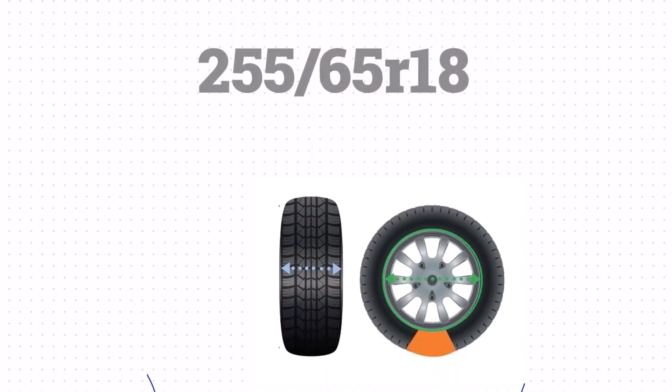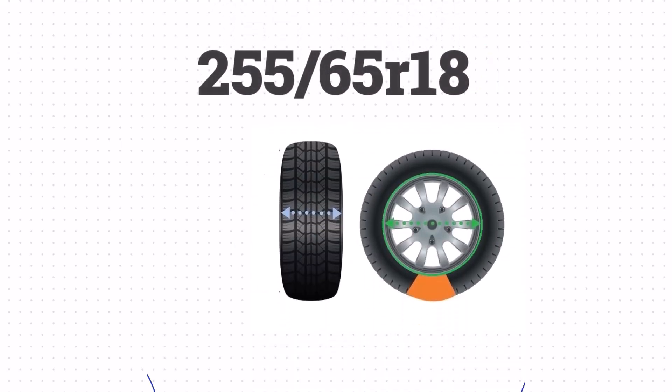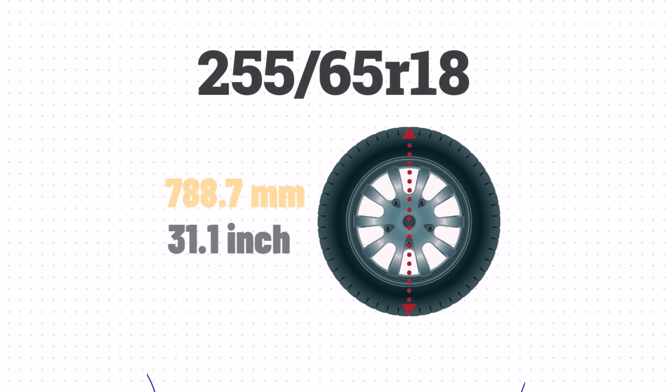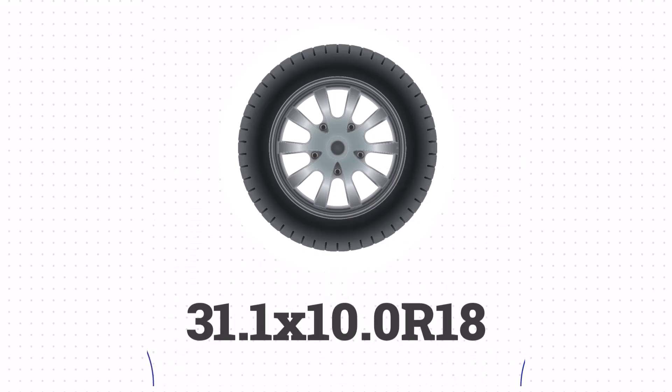Now that we've got the width, sidewall size, and wheel size, we can combine all this information to determine the height of the tire. We take the sidewall size, add the wheel size, and then add the sidewall size one more time. This gives us a height of 31.1 inches. In summary, the size 255/65R18 is equivalent to 31.1 x 10.0 R18 in inches.